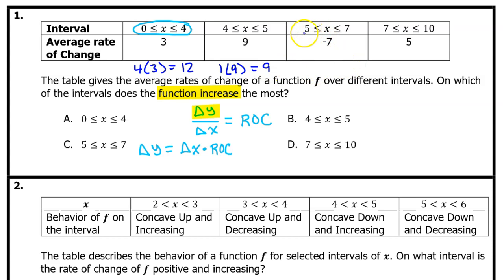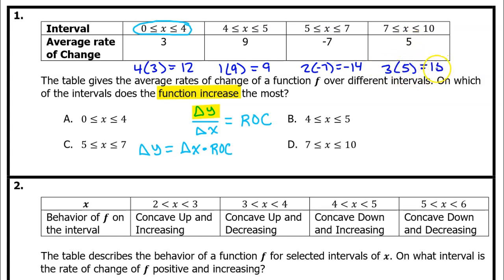For the next interval, the width of the interval from 5 to 7 is 2, multiplied times the rate of change — that is negative 14. This is a decrease of 14. We want the interval that has the greatest increase, so we know that's not going to be it. And for the last interval, the width from 7 to 10 is 3, times the rate of change of 5, which is 15. So we have calculated delta y — the function increase for each interval — and it turns out to be 12, 9, negative 14, and 15. So 15 is the greatest increase, which happened in the interval from 7 to 10.